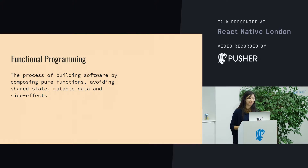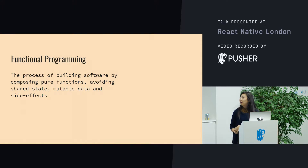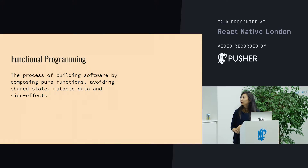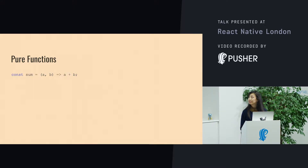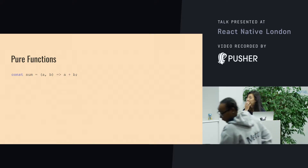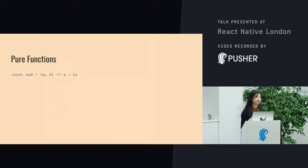Functional programming is the process of building software by composing pure functions. A pure function is something like this — this is a really simple one. It adds two numbers together.